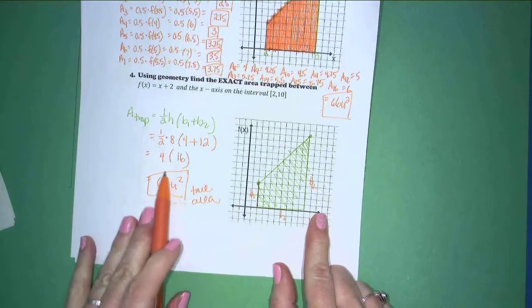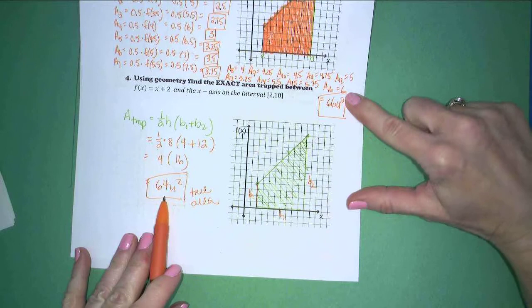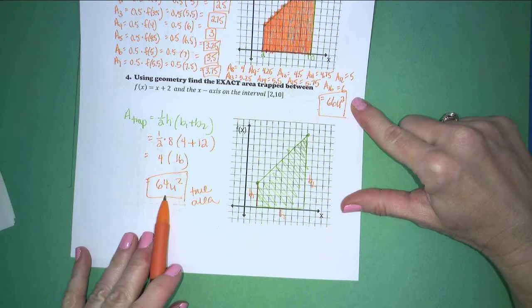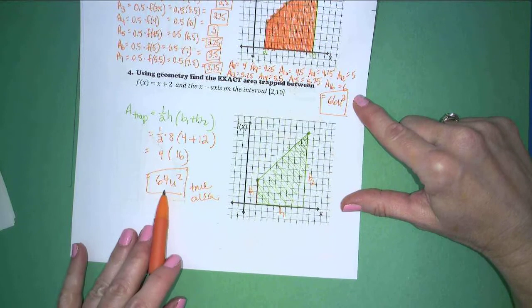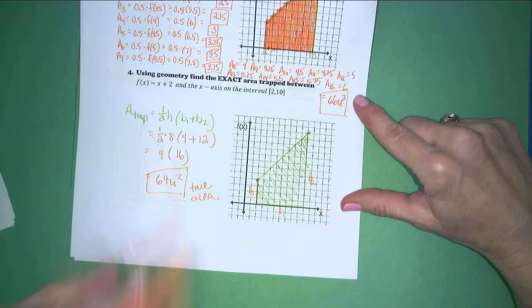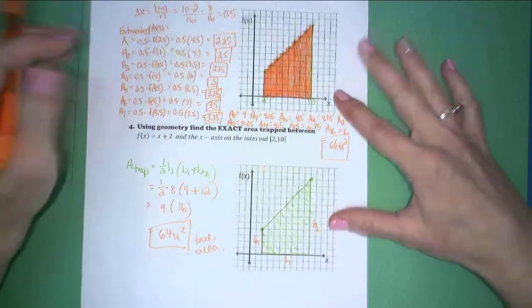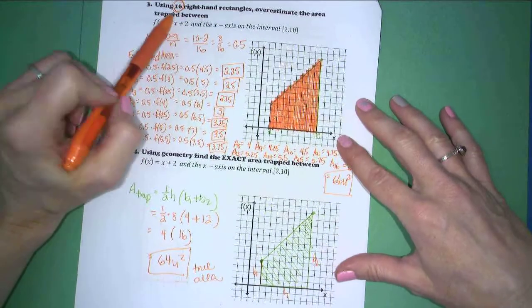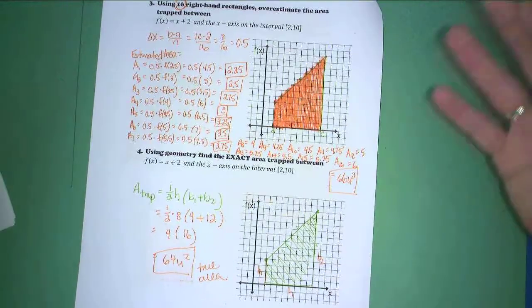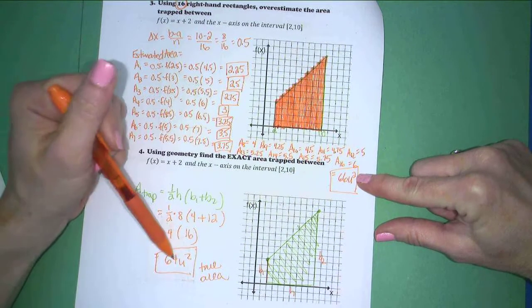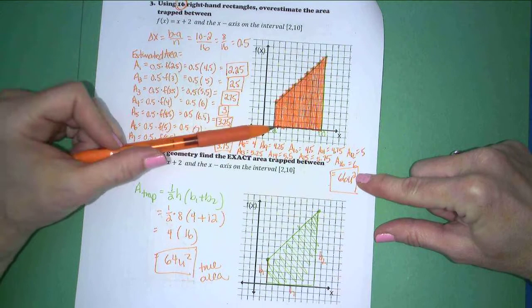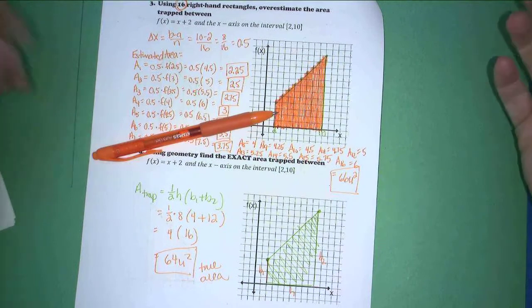But what I want you to notice is how this new way of finding area, 66 units squared, is very close to the true area, 64 units squared. I wonder if, instead of making 16 right-hand rectangles, if we had made 32, I'm sure this 66 would be closer to the true area. Or if we made 64 rectangles, or 128 rectangles.